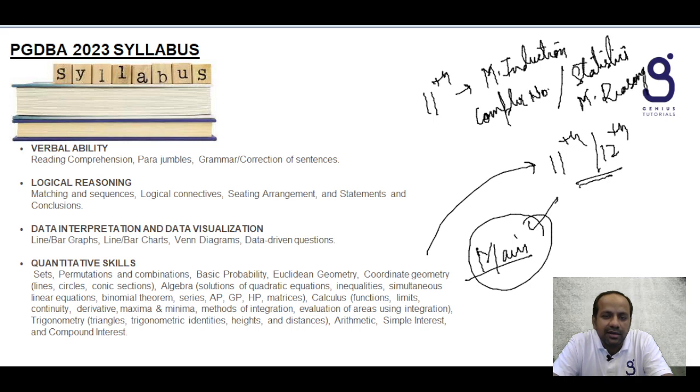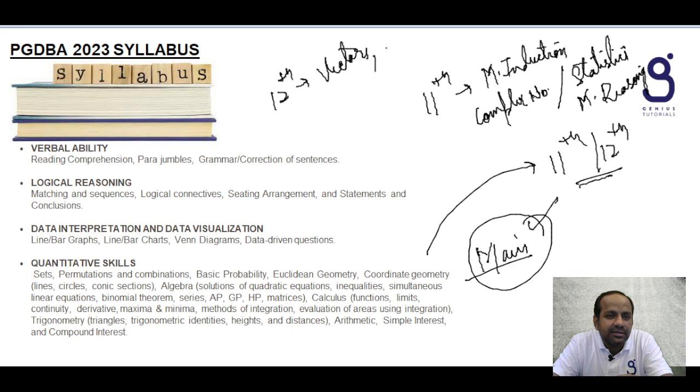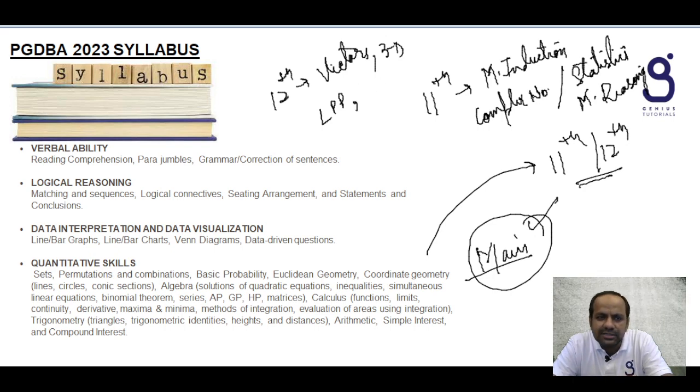From 12th class you can skip these chapters: vectors, 3D, your linear programming problems. You can skip these topics from your 12th and 11th portion. Apart from this, you have to cover each and everything from your 11th and 12th NCERT books.